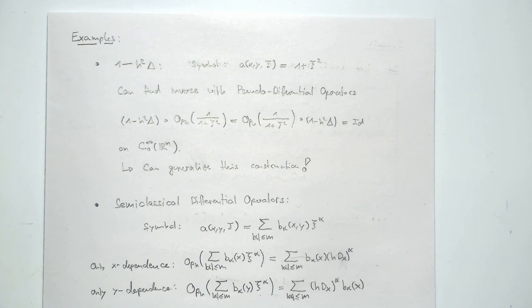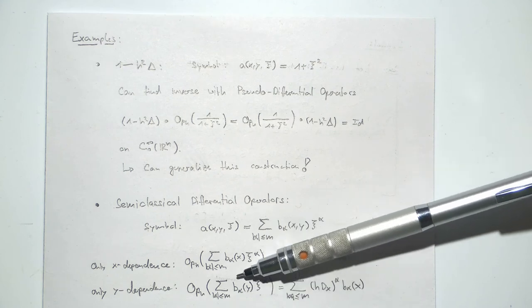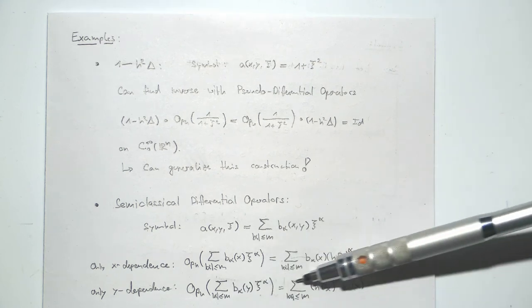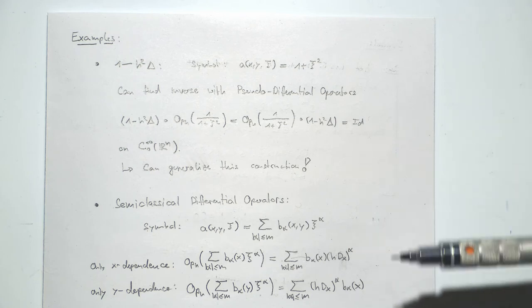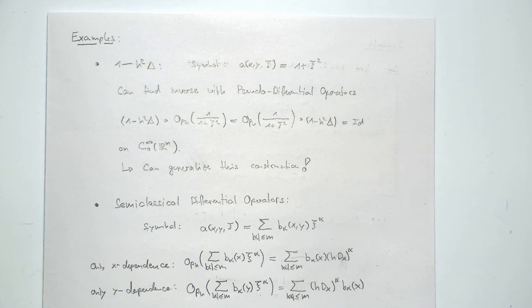On the other hand, if we only have y-dependence of the b_alphas, we first multiply our function by the coefficient functions and then differentiate the whole package. This comes from the fact that we have this correspondence between multiplication and differentiation — the problem is that multiplication is commutative, but differentiation and multiplication by a function are not commutative in general. So we have these two possibilities.